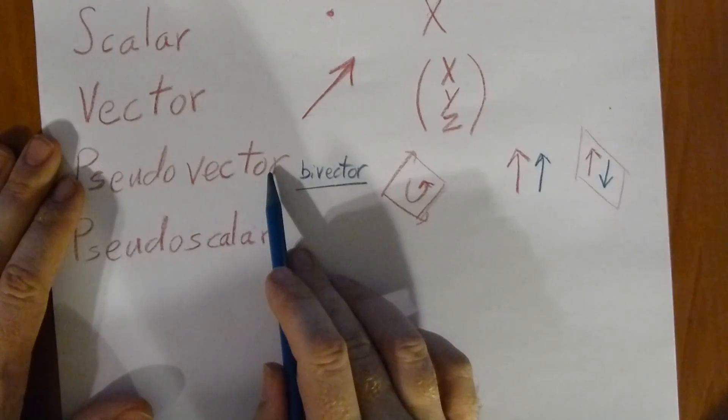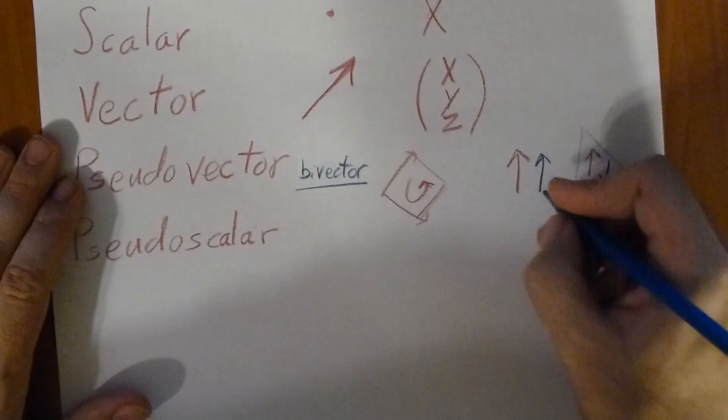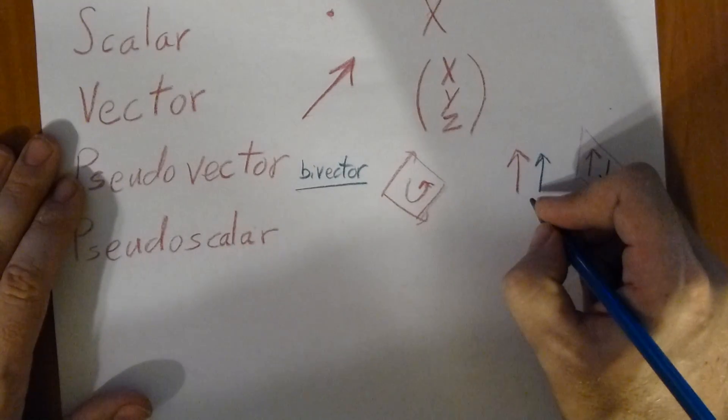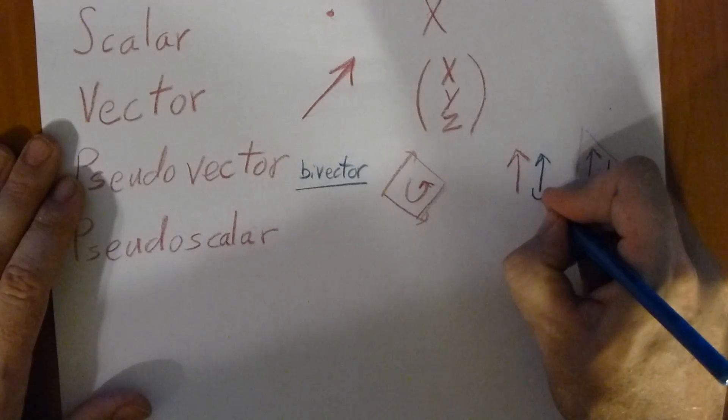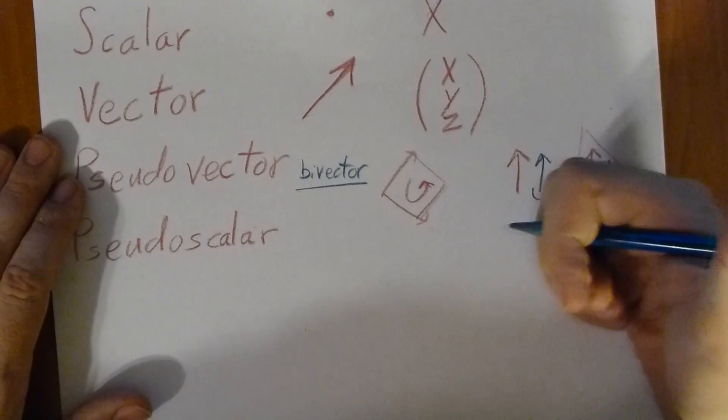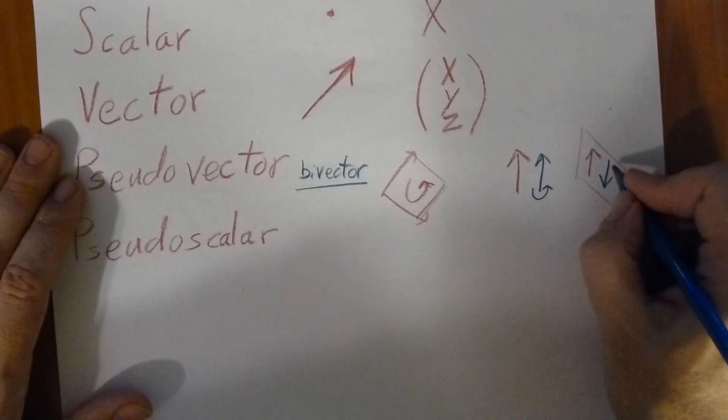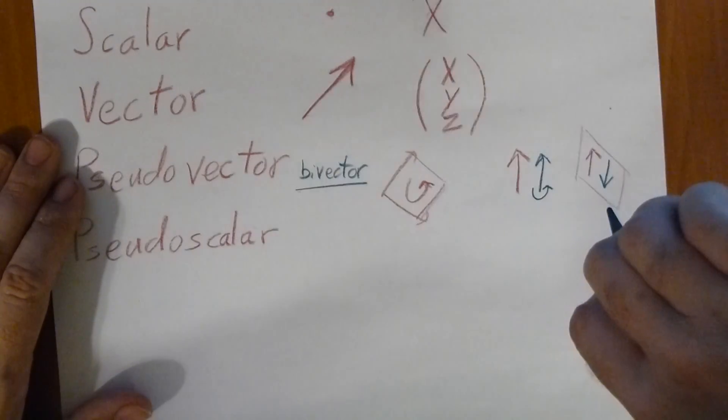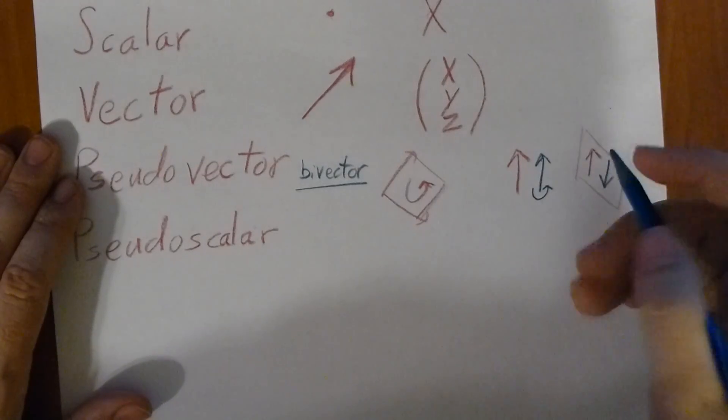Pseudovectors are related to rotation. Rotational things have a lot to do with pseudovectors. If I put a little rotation here, the right hand rule points up, but in the mirror it's pointing the other way because the rotation has to match. So that means it's pointing down.